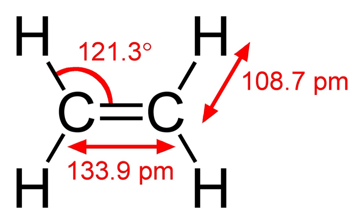In terms of structure and properties, this hydrocarbon has four hydrogen atoms bound to a pair of carbon atoms connected by a double bond. All six atoms that comprise ethylene are coplanar. The HCH angle is 117.4 degrees, close to the 120 degrees for ideal sp² hybridized carbon. The molecule is also relatively rigid; rotation about the C-C bond is a high energy process that requires breaking the pi bond.